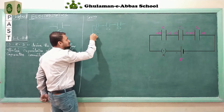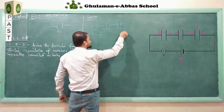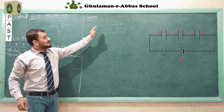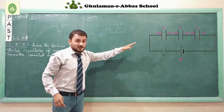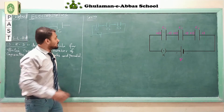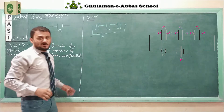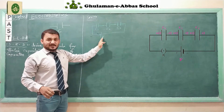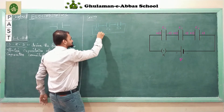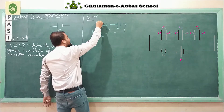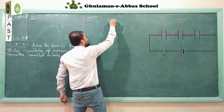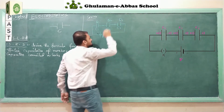We connect these three capacitors with a battery. The battery symbol has two parallel lines that are unequal, unlike capacitors in which the two parallel lines are equal. Let's say we have applied a potential difference of V. Due to the application of this potential, a charge will flow. The charge in capacitor C1 is Q1, in C2 it is Q2, and in C3 it is Q3.